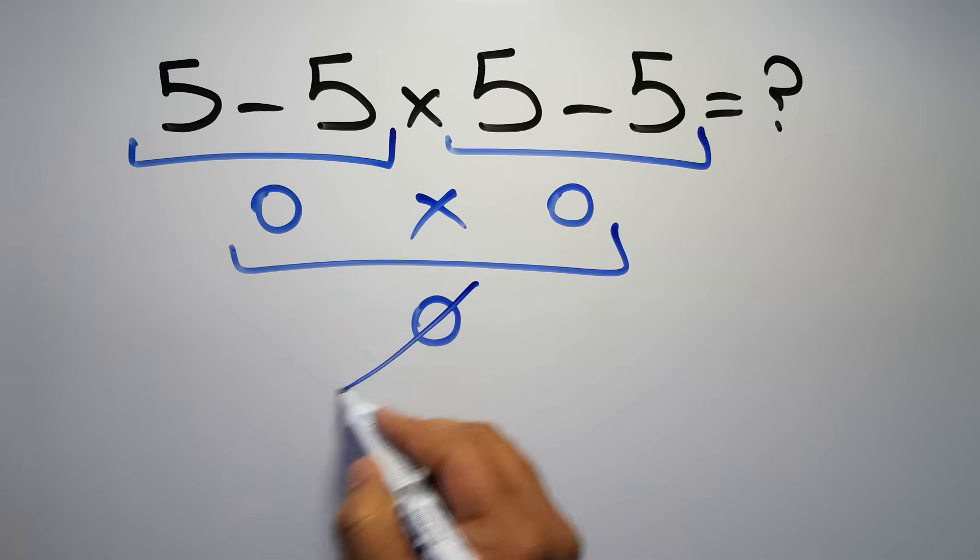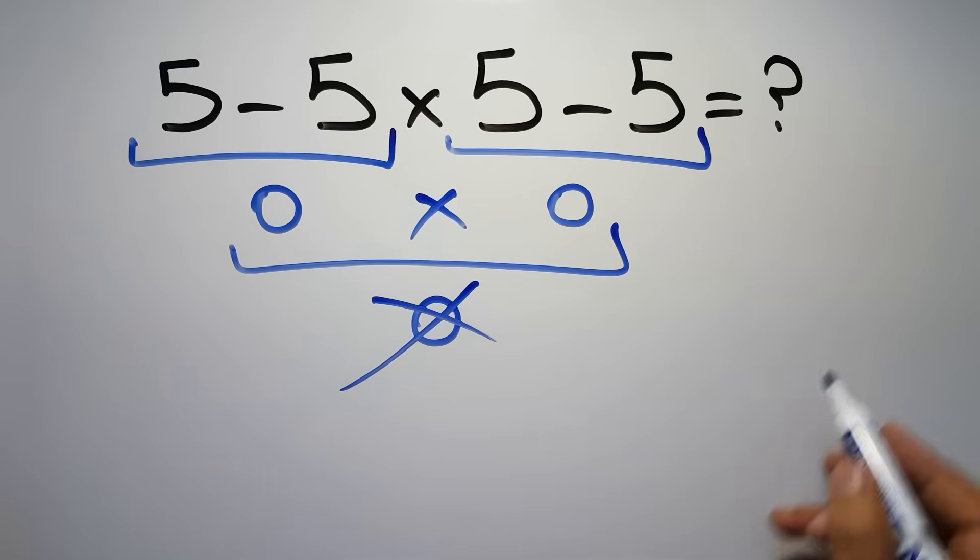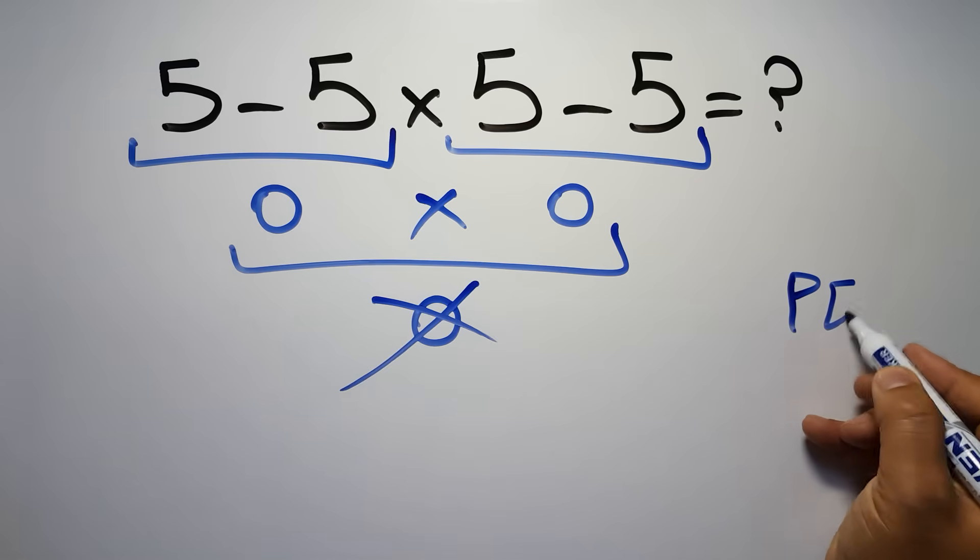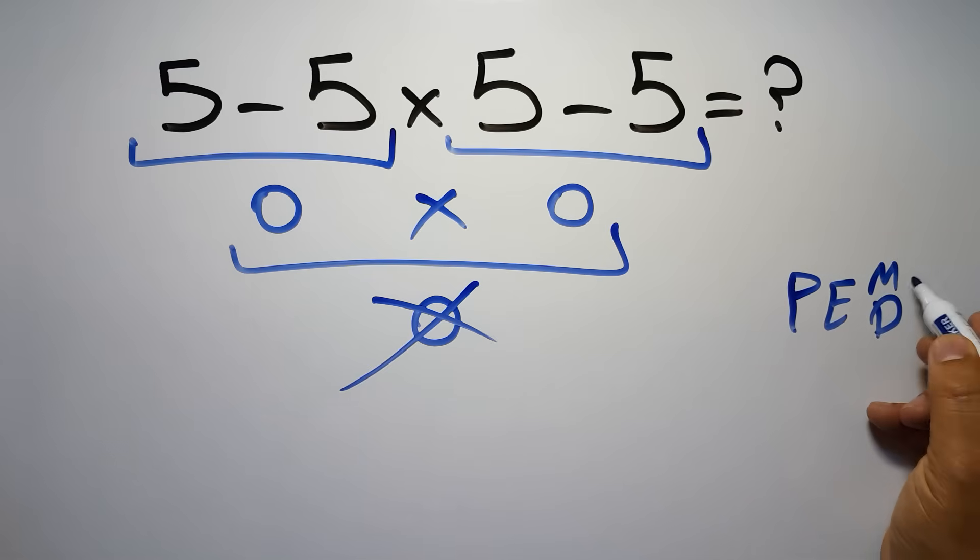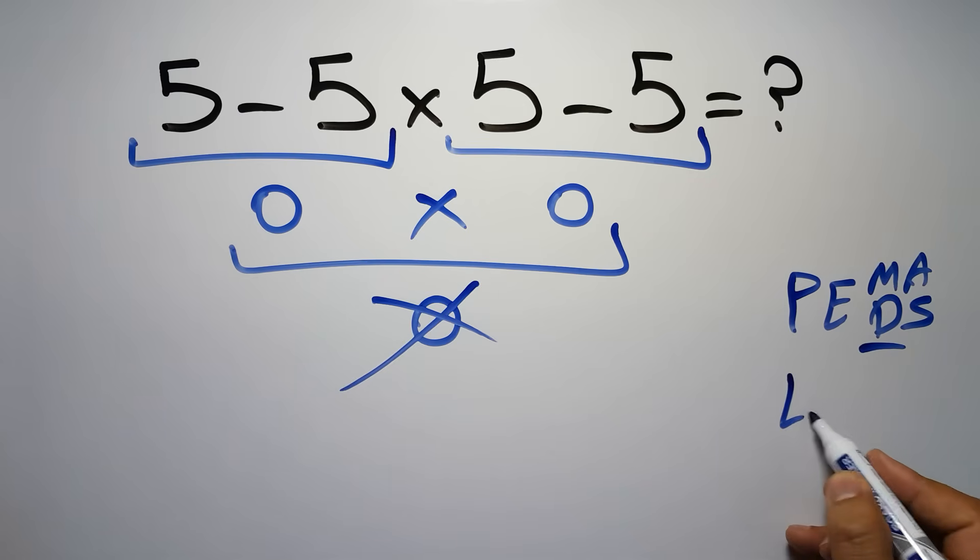Because according to the rule of operations, first we have to do parentheses, then exponents, then multiplication or division, and finally addition or subtraction. Remember that multiplication and division have equal priority and we have to work from left to right, and the same applies to addition and subtraction.